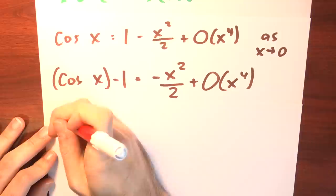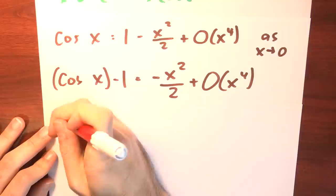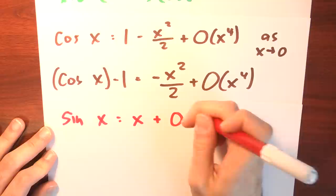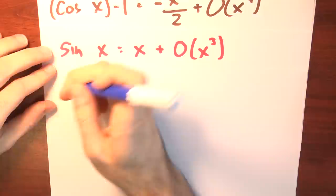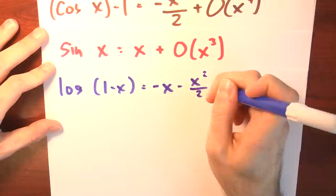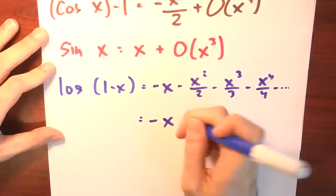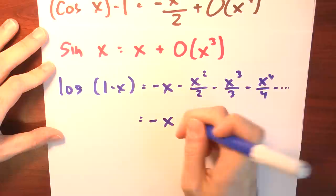We can write sine of x in the same way: sine of x has a Taylor series expansion starting with x, plus higher order terms beginning with an x cubed term. And log of 1 minus x has a Taylor series expansion: minus x minus x squared over 2 minus x cubed over 3 minus x to the 4th over 4, and it keeps going. We can write that as just minus x plus terms of degree at least 2.